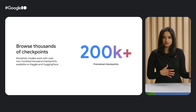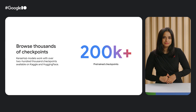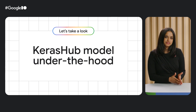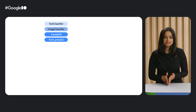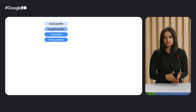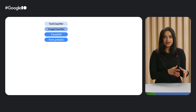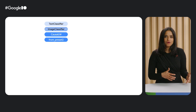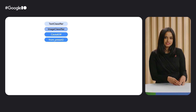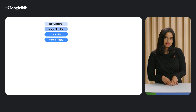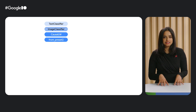Now, let's take a look at a Keras Hub model under the hood and learn more about their underlying structure. In Keras Hub, we have different task models like causal LM, image classifier, and text classifier. Each task model is made up of three key components: a backbone, a preprocessor, and a task head. Tasks take raw inputs — whether it's an image, audio, or text — and map them to model predictions. Tasks are the highest-level entry points into the Keras Hub API. They combine both preprocessing and modeling into one class, making it really easy to use. You can use tasks for either fine-tuning or inference.